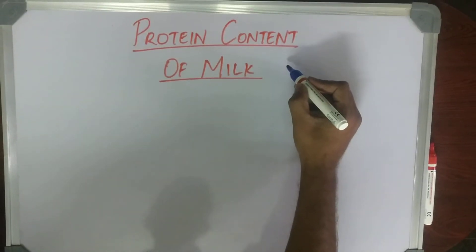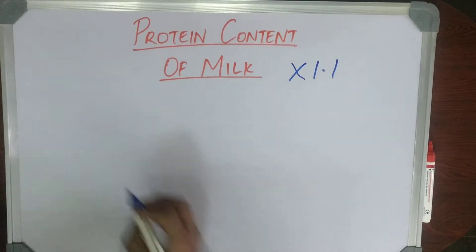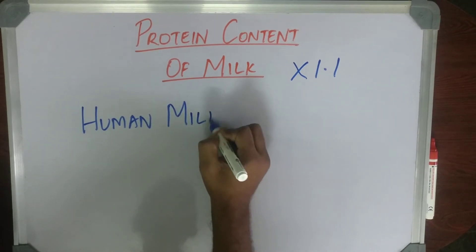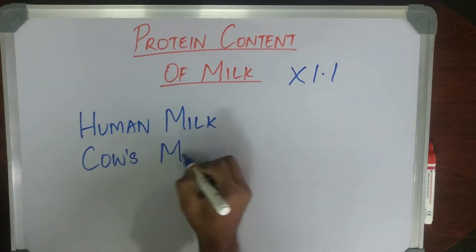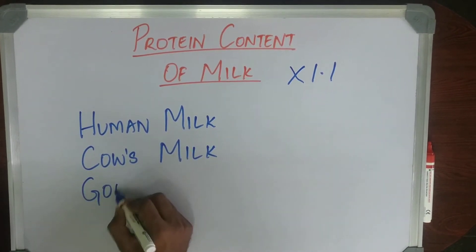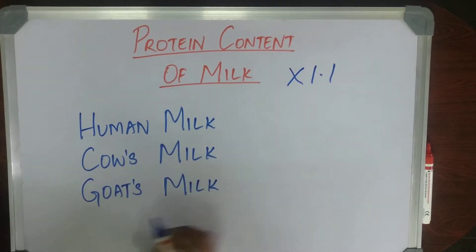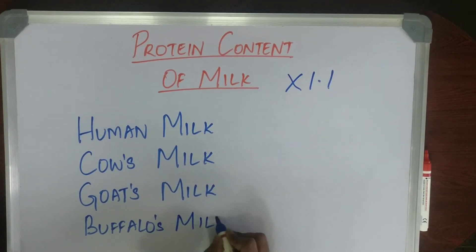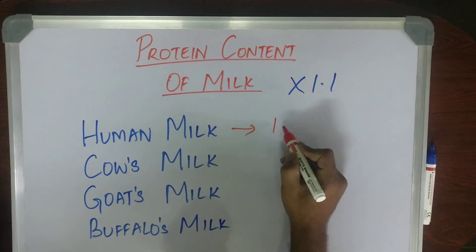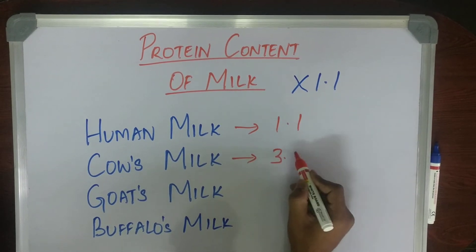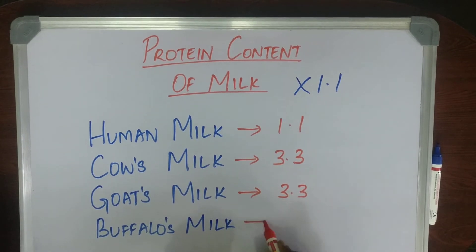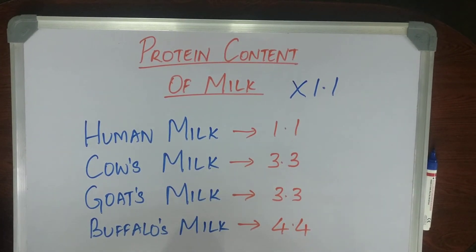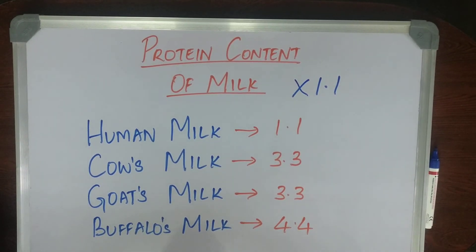All the protein content of different milks is in the multiples of 1.1. The protein content of human milk is 1.1, cow's milk is 3.3, goat's milk is 3.3, and buffalo's milk is 4.4. So you can see they are all following multiples of 1.1. This is per 100 grams of milk.